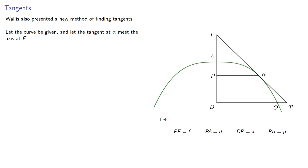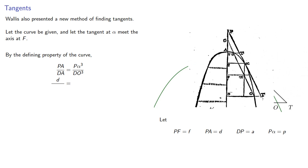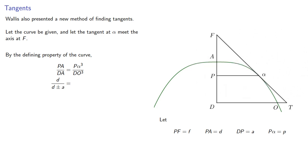Now by the defining property of the curve, the ratio PA to DA is P alpha cubed to DO cubed. Now PA is D, and in our figure DA is drawn as being past P, but remember in Wallace's original diagram it could be on either side, and so Wallace wrote it as D plus or minus A. And P alpha is P, so P alpha cubed is P cubed. And so we can solve for DO cubed.